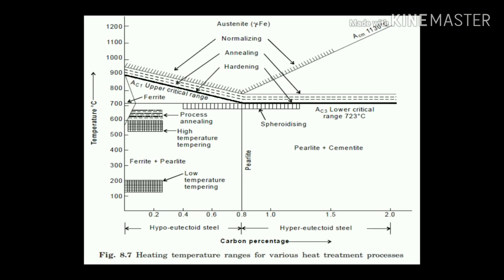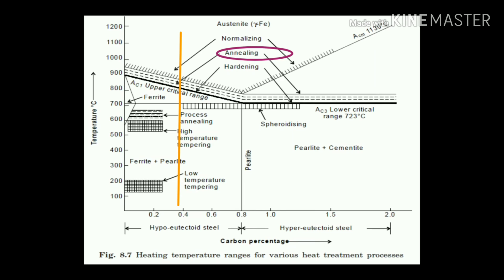The second process is annealing. For eutectoid steel in annealing, heat the material 20 to 30 degrees centigrade above the upper critical temperature (ACM), hold at that temperature, then cool inside the furnace itself — just switch off the furnace. It takes more time compared to normalizing and also forms a pearlitic structure, which is soft in nature. For hypo-eutectoid steel in annealing, heat 20 to 30 degrees above the upper critical temperature range, hold, then cool in the furnace itself. It forms a pearlite plus ferrite structure at room temperature.